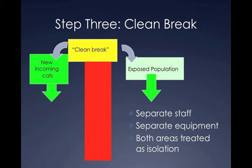What we want, if we can, is to have separate staff, separate equipment, and both areas treated as isolation. This last one is often the hardest for people to understand — why do I need to treat it as isolation? Those are the clean, new, unexposed cats. Sometimes we treat things as isolation as a means of protecting, so that if both areas are treated as isolation, you're not carrying anything back and forth.